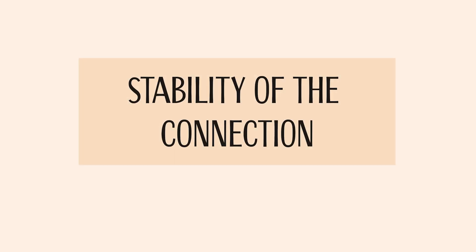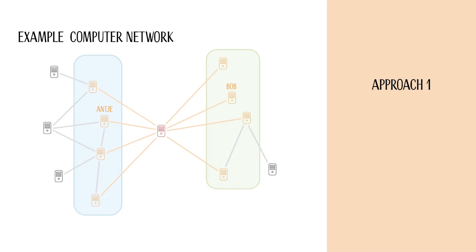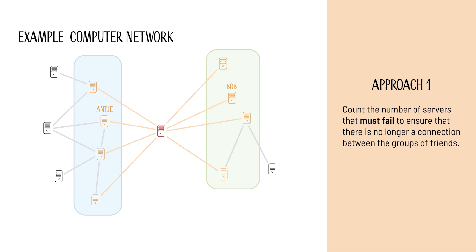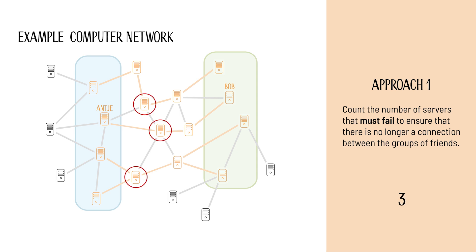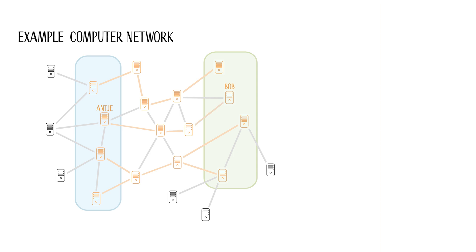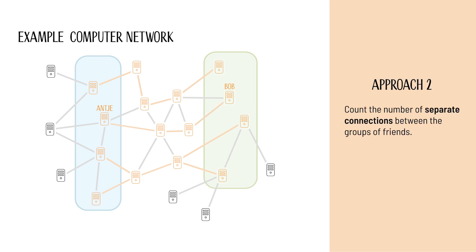We want to assess how stable the connection between Antje's and Bob's groups of friends is. There are two approaches for this. Approach 1: we count the number of servers that must fail to ensure that there is no longer a connection between the groups of friends. In the displayed network, this number is 1. In the more complex version, at least 3 computers would have to fail to separate the groups of friends from each other. In the second approach, we count the separate connections between Antje's and Bob's groups of friends. By separate connections, we mean that the connections do not share any computers.